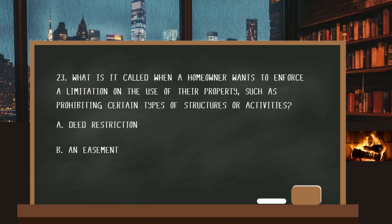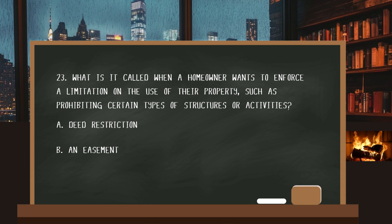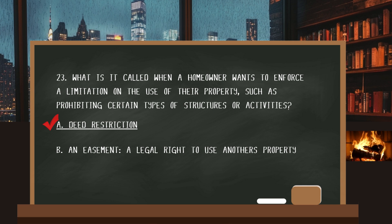Number twenty-three. What is it called when a homeowner wants to enforce a limitation on the use of their property, such as prohibiting certain types of structures or activities? The answer is A: deed restriction. An easement is the legal right to use another's property.